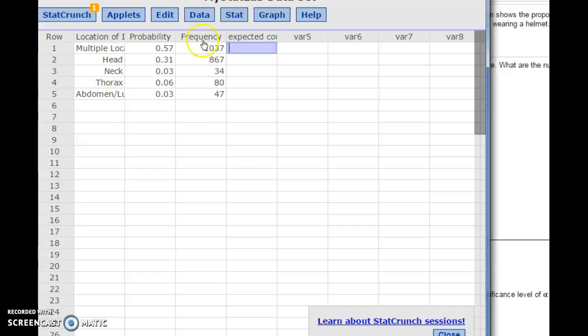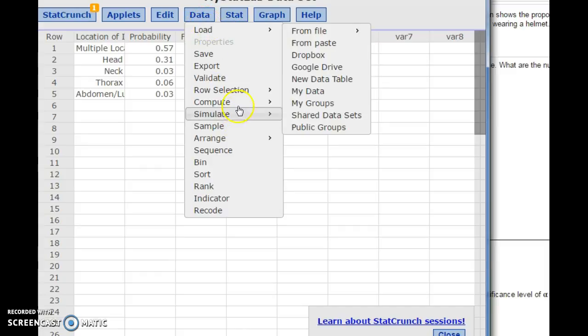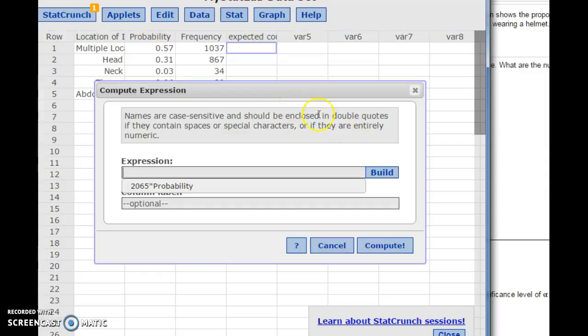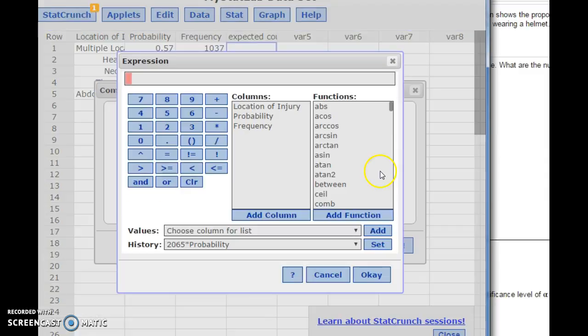In StatCrunch, you would go to data compute expression, and you want to build your expression. You're going to take the number of people in your sample and multiply by your probability. So double-click that and hit OK.